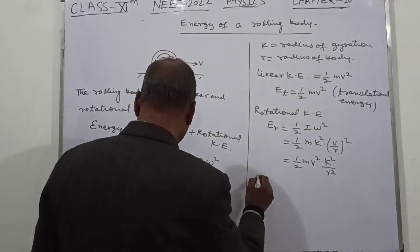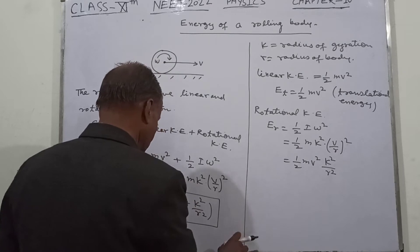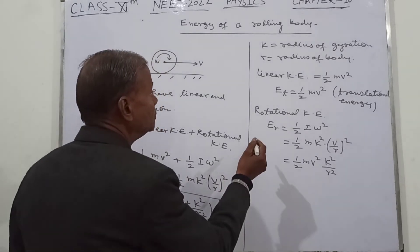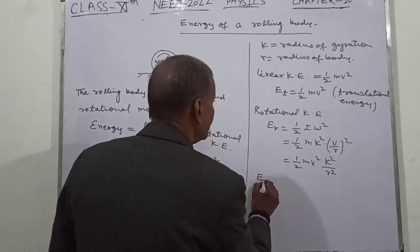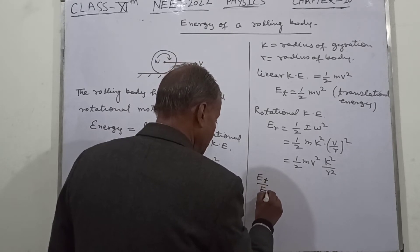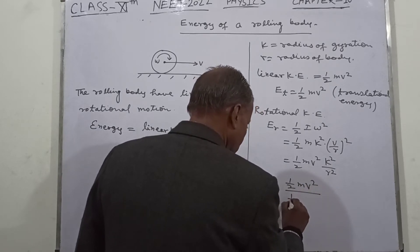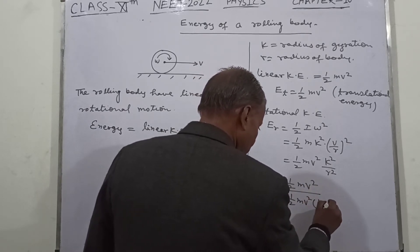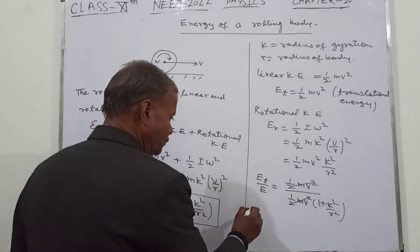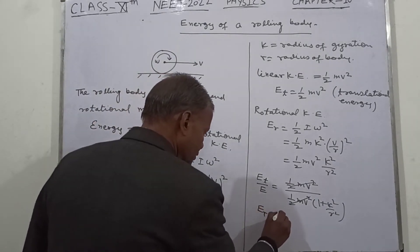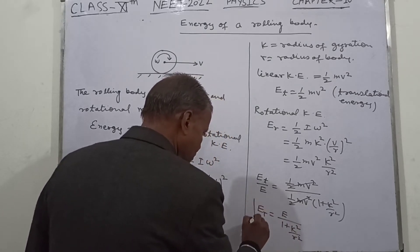For the ratio E_T upon E: E_T/E equals one-half mv² divided by one-half mv²(1 + k²/r²). The common terms cancel, giving E_T = E / (1 + k²/r²). This is the expression for translational kinetic energy as a fraction of total energy.